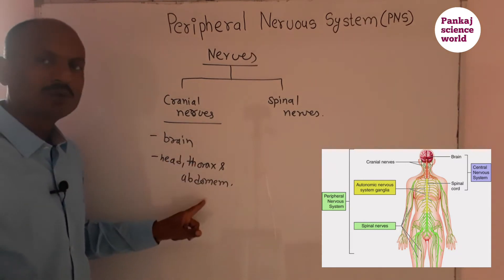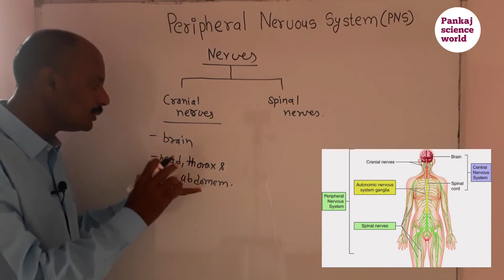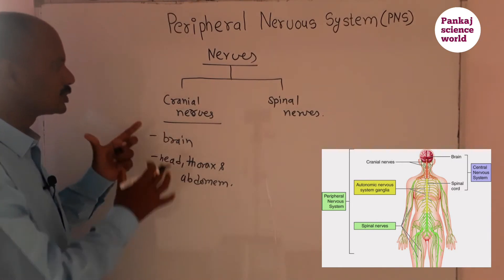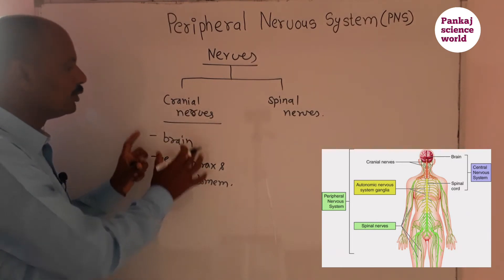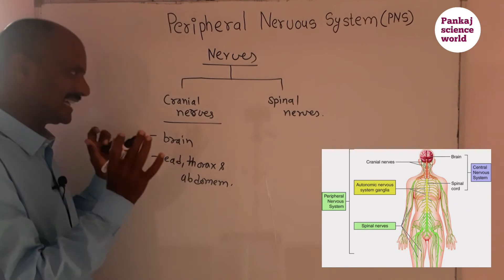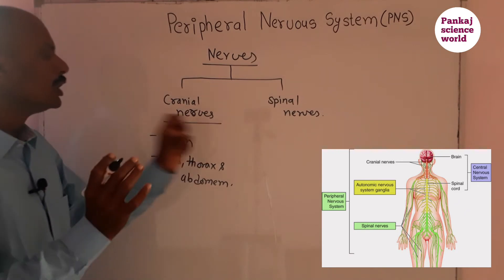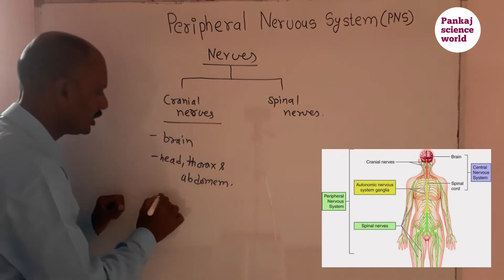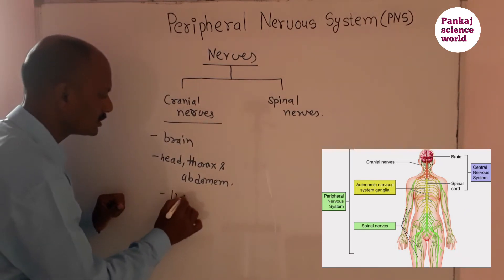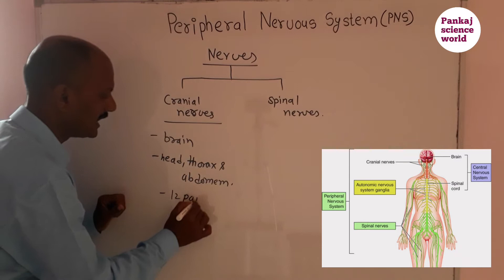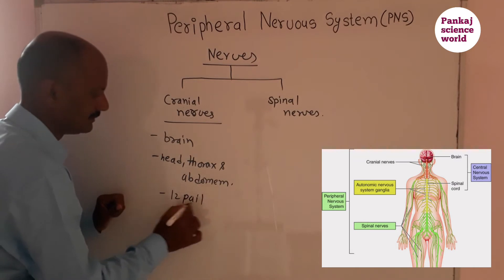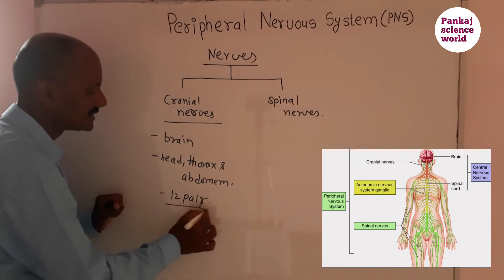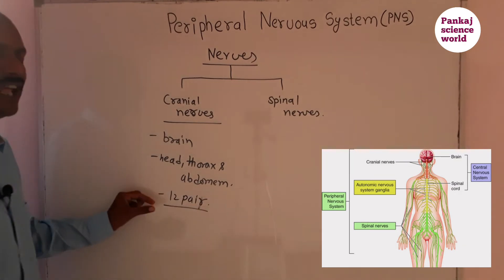The parts in our head, thorax, and abdomen are connected to the brain by cranial nerves. There are 12 pairs of cranial nerves.